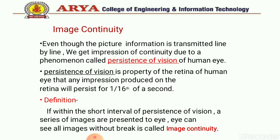In commercial motion pictures the frame rate is 25 frames per second in most TV, which is far greater than 16. So in image continuity, if within a short interval of persistence of vision a series of images are presented to the eye and one can see all images without a break, that is called image continuity.